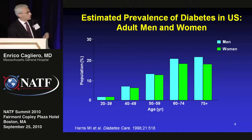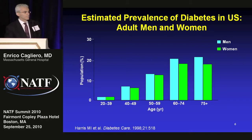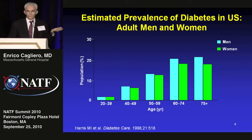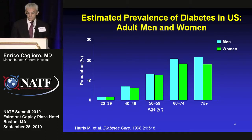The incidence of type 2 diabetes goes up with aging — above age 60, almost 20% of the population has type 2 diabetes, with no significant difference between men and women. If you look at different patient populations, in cardiac surgery units and cardiac units in our hospital, about 30 to 40% of the population has diabetes.